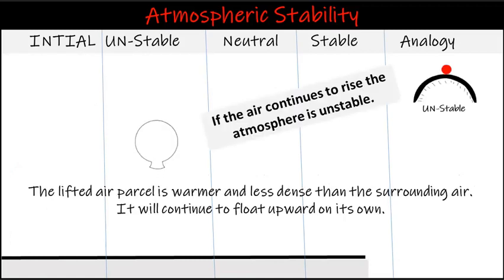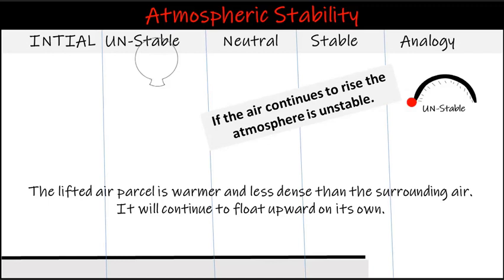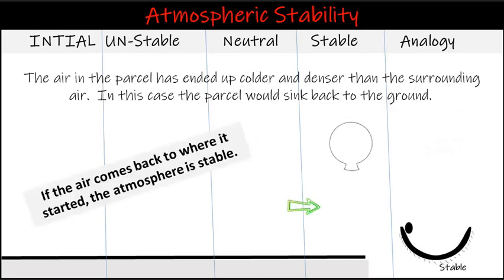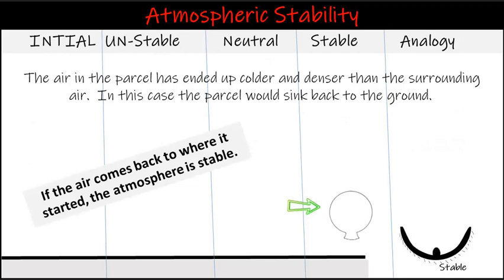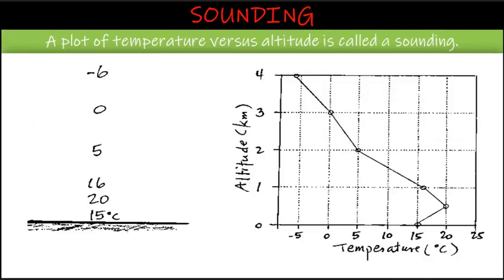If an air parcel is warmer than its surrounding environment, it will be less dense than its surroundings and will rise like a hot air balloon — this is unstable air and has the potential for creating storms. If an air parcel is the same temperature as its surroundings, the parcel will not move of its own accord. If an air parcel is cooler than its surrounding environment, it will be denser and will sink — this is stable air, which generally leads to clear skies. A plot of temperature versus altitude is called a sounding.